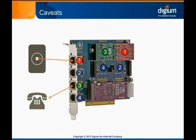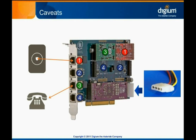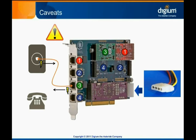Before we begin configuration, we have a few quick warnings. Remember that if your card has any FXS modules, a power cable must be connected to the Molex connector on the card. If this isn't done, the FXS won't work properly because it won't have enough voltage to ring the attached phone. Also be very careful not to connect a phone line to a powered FXS port. Because both ends provide power, there is significant risk of causing electrical damage to your Dottie card. Plug the telephone into the FXS port, and only plug the line providing dial tone into the FXO port.